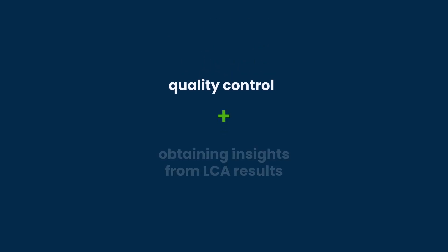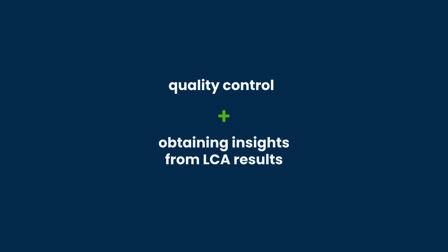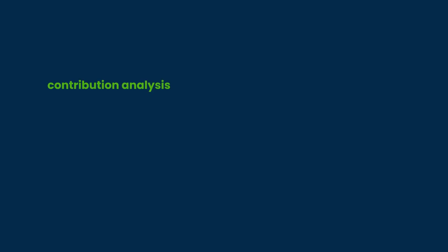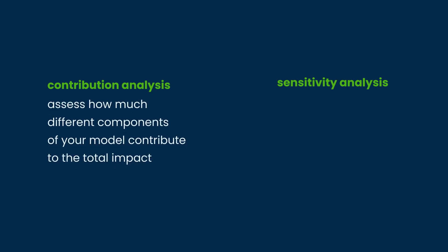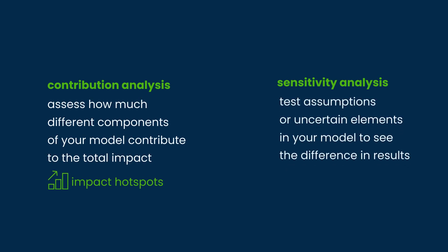Next to quality control, the interpretation phase also helps you obtain insights from your LCA results. Two types of analysis are often used: contribution analysis and sensitivity analysis. During contribution analysis, you assess how much different components of your model contribute to the total impact. This can give you insights in impact hotspots that might be good places to start for impact reduction. With sensitivity analysis, you test assumptions or uncertain elements in your model to see the difference in results if these elements would change.